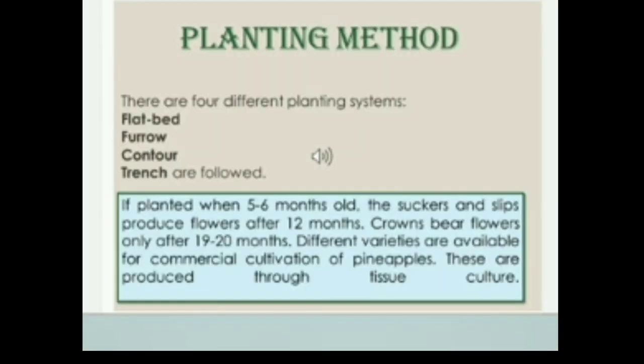Planting method: There are 4 different planting systems — flatbed, furrow, contour and trench. If planted when 5 to 6 months old, the suckers and slips produce flowers after 12 months. Crowns bear flowers only after 9 to 20 months.